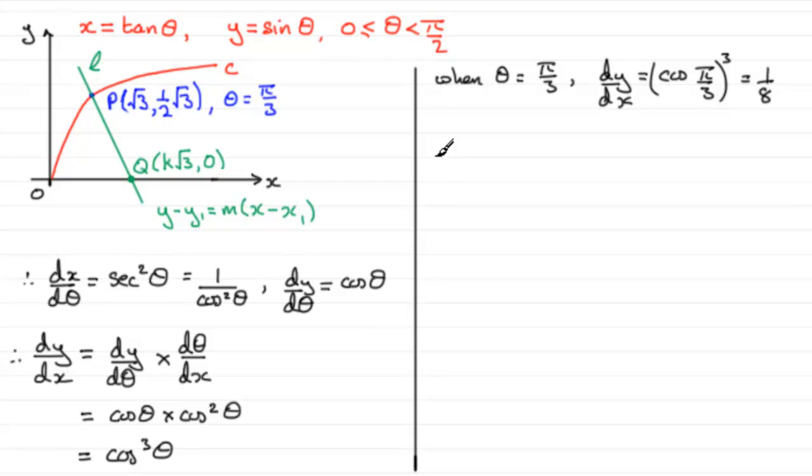So at this point then I therefore know that at P, the gradient of the normal is going to be the negative reciprocal of this. So in other words, the gradient will be minus eight. Now I'm in a position to work out what the equation now of the normal is. So therefore the equation of L is,